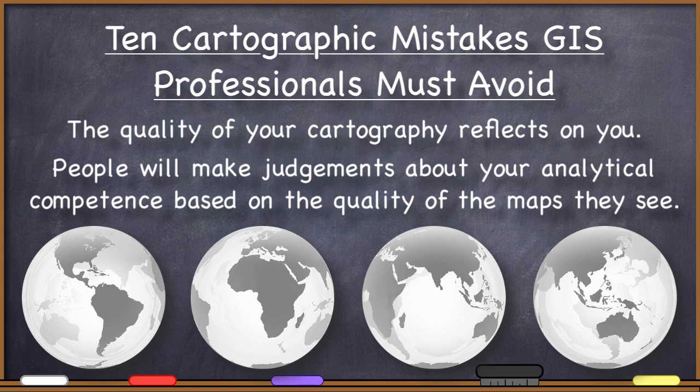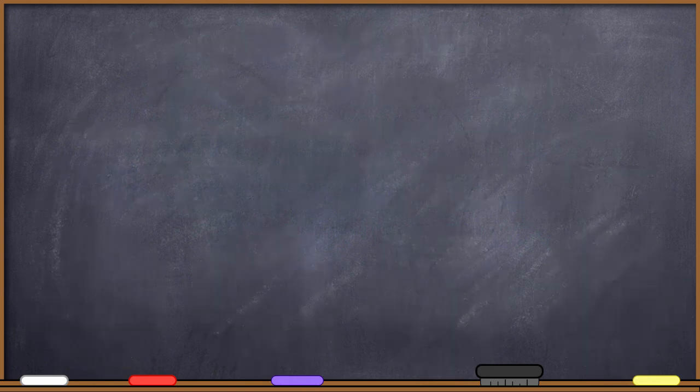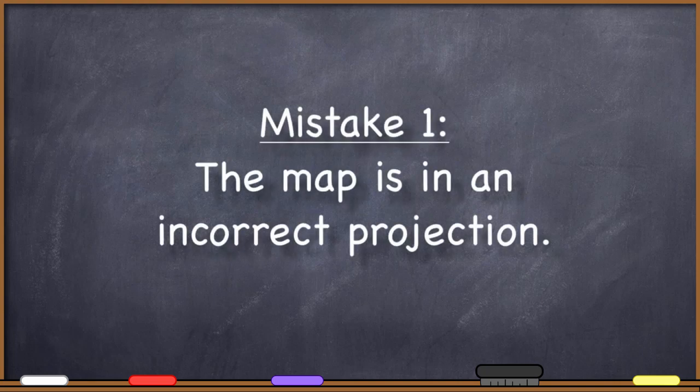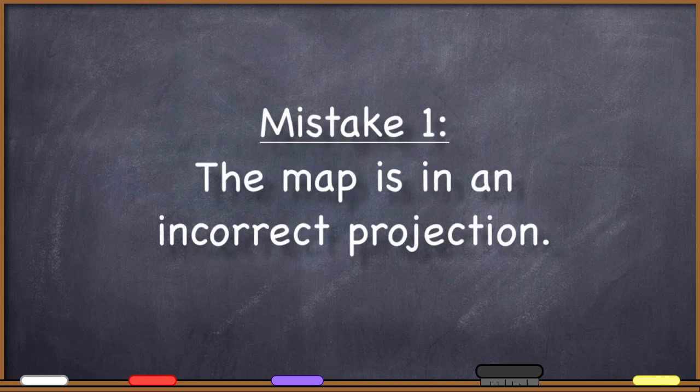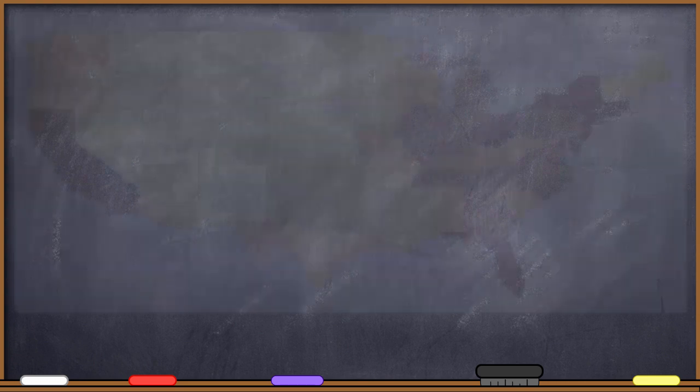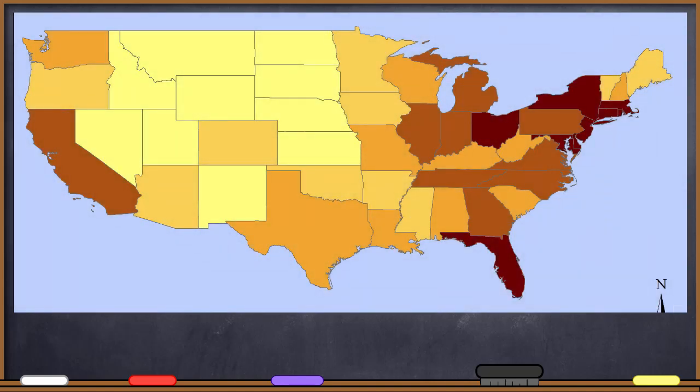Here are the ten items, in no particular order. Number one. The map is in an incorrect projection. If the data shown on your map is not properly projected, then you're immediately not going to be taken seriously. I have seen more maps of the United States that look like this than I can count.